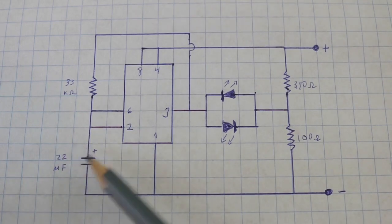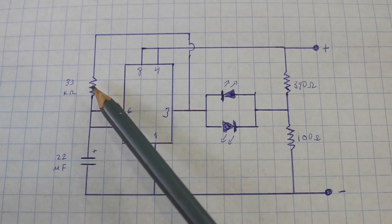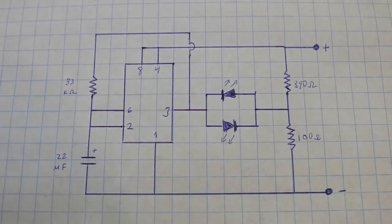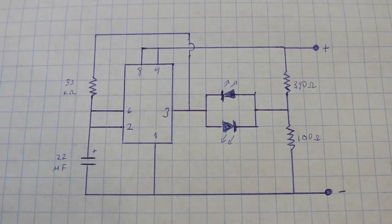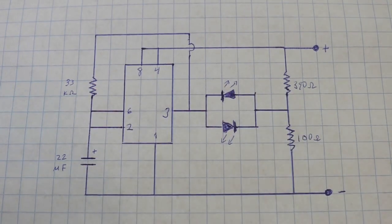A larger capacitance will result in a lower frequency and vice versa, and a higher resistance will mean lower frequency and vice versa. You can play with these values to change the frequency of oscillation.